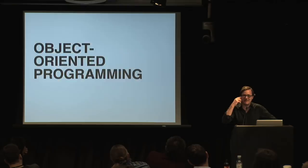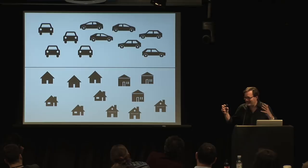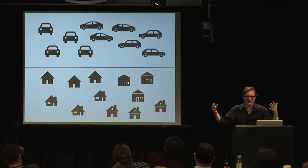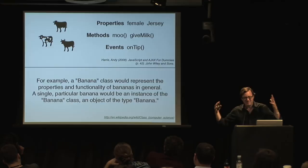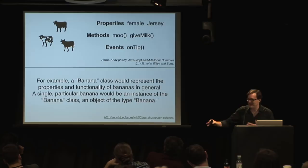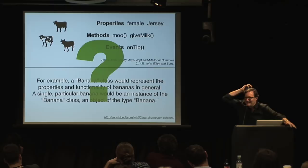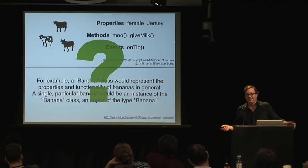When I started getting back into programming, people were trying to explain it to me. They had all these metaphors. It could be like a car — a yellow car or a red car, four doors or two doors. Forget the car, how about a house? It could have no windows, it could have a door. Or try a cow — a female Jersey cow that can moo and give milk, and if you tip it, it does something. I really couldn't figure it out. Even when I started programming in object-oriented languages, I still didn't get it.